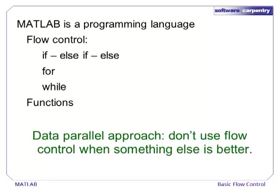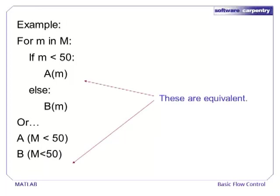We also want to emphasize that under a data parallel approach to programming, loops and if/else statements are not the solution to every problem. For instance, if we want to perform one of two functions on each element of a matrix, we could write a for loop with an if/else inside. In MATLAB, it is better to express the concept all at once by passing an array of values that satisfy each condition to A or B.